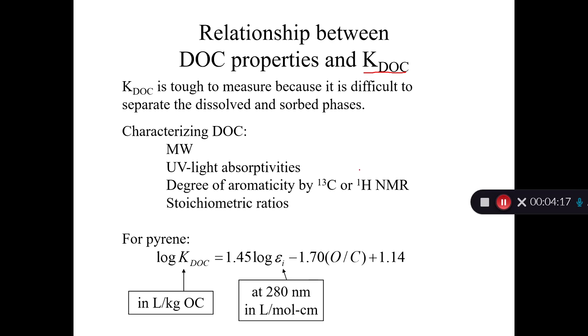And there have been some attempts to characterize dissolved organic carbon based on its overall molecular weight, its ability to absorb UV light, its degree of aromaticity, which you can measure using either carbon-13 or proton NMR, and also its stoichiometric ratios like oxygen, carbon, hydrogen, and nitrogen ratios.